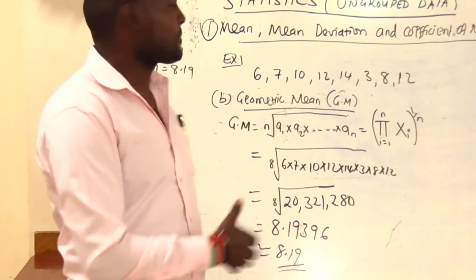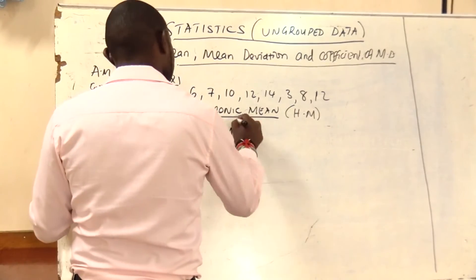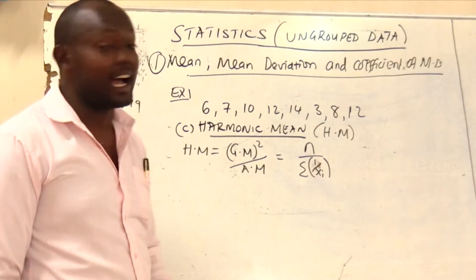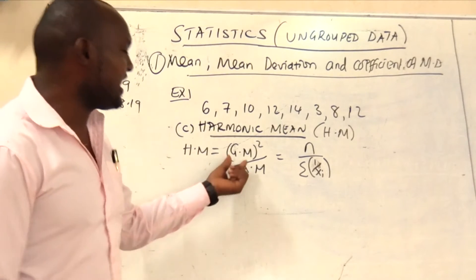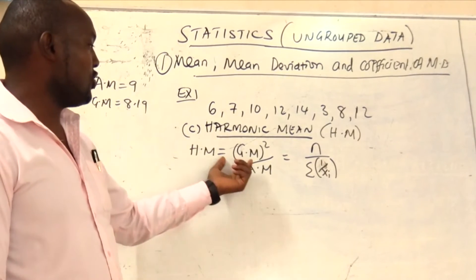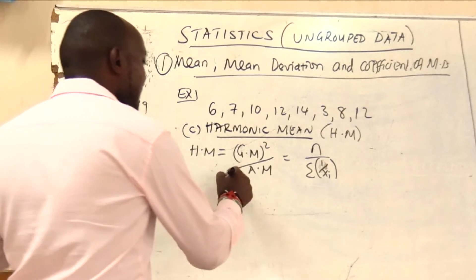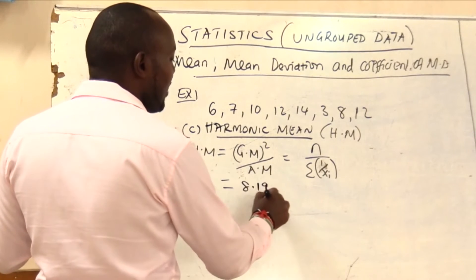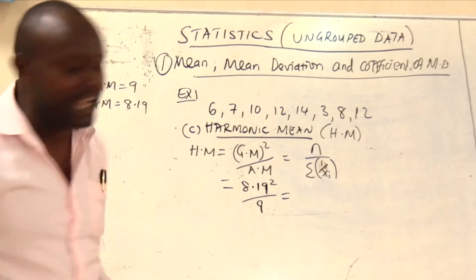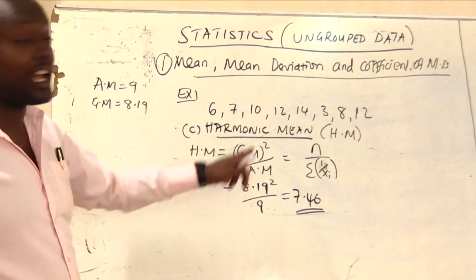We go to the third method: harmonic mean. You can calculate harmonic mean using two methods. If you already have the geometric mean and arithmetic mean, you can use the formula: HM equals GM squared over AM. Our geometric mean was 8.19 and arithmetic mean was 9, so it is 8.19 squared over 9, and you get approximately 7.46.